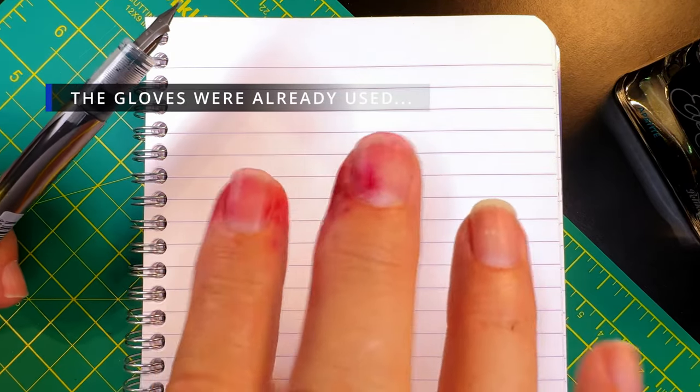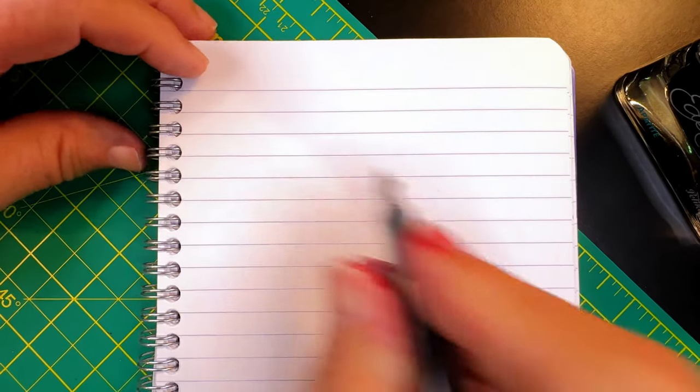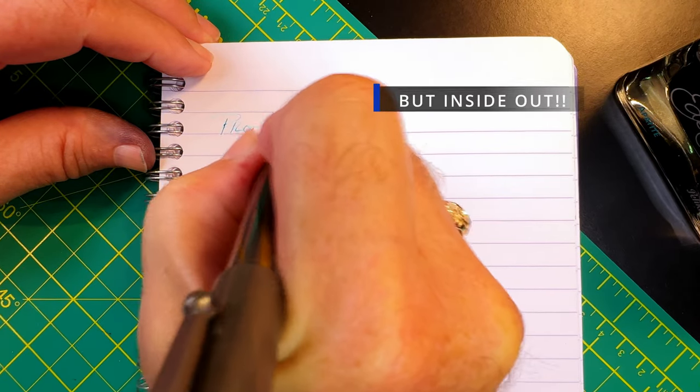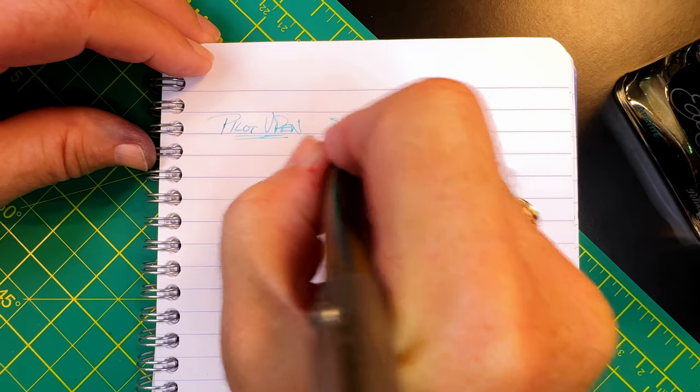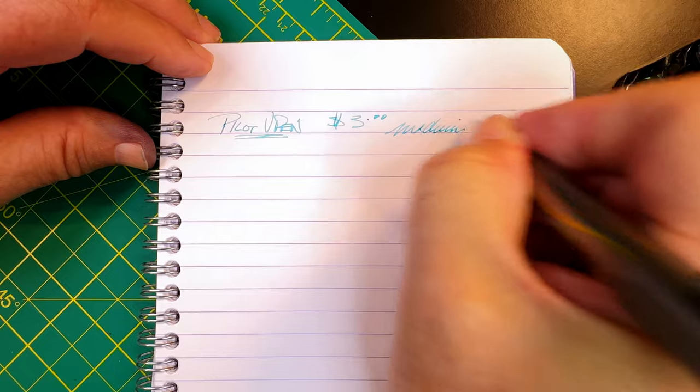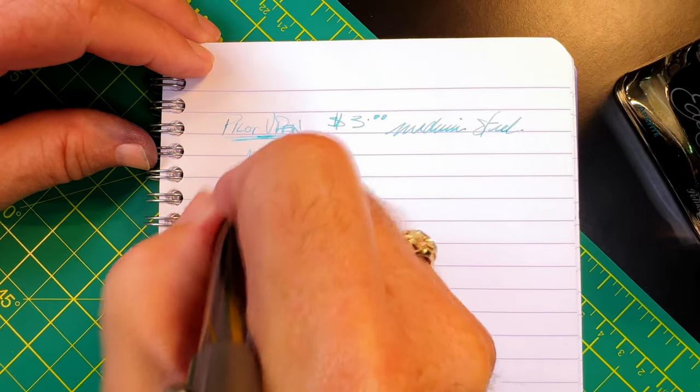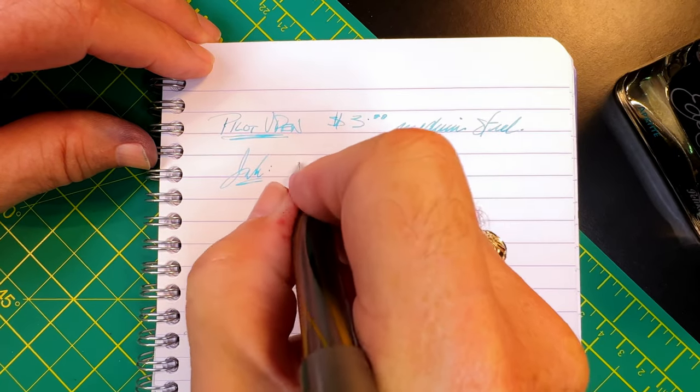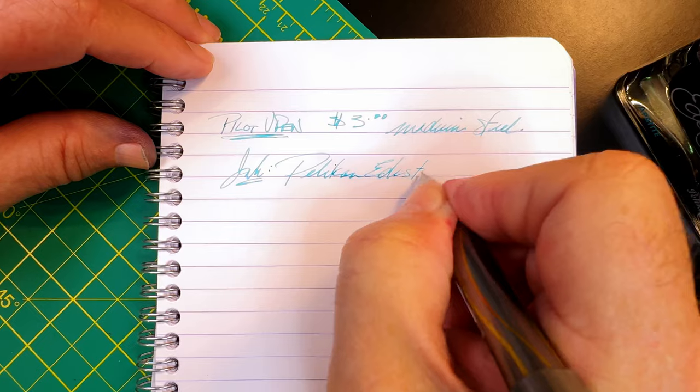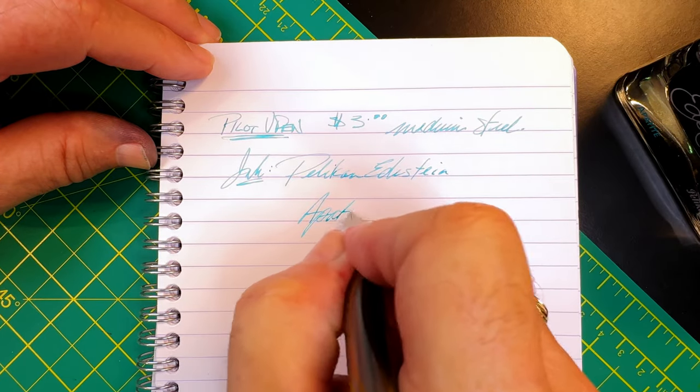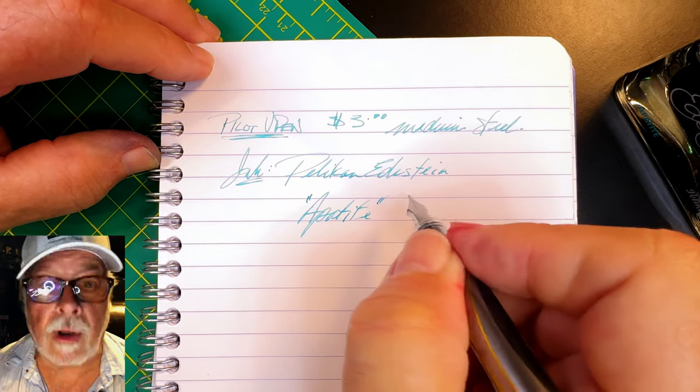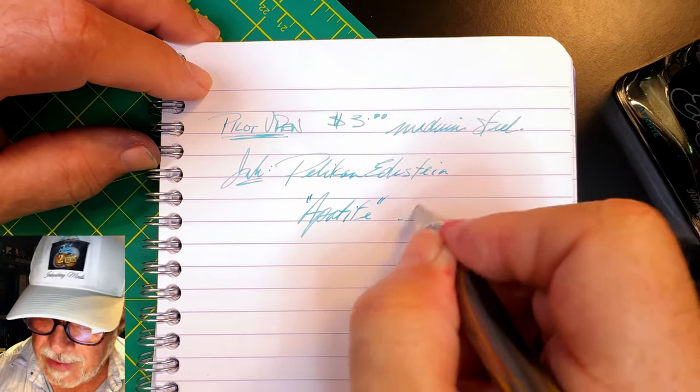But let's give the pen a try. This is the Pilot V-Pen, and they're about three dollars, and this is a medium steel nib. And the ink is Pelican Edelstein Appetite. I still don't know whether Appetite is something that you feel or whether it's actually a mineral or something like that, but it's a lovely blue green ink.